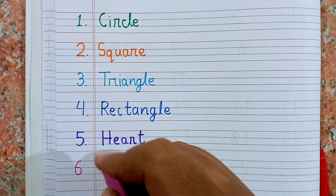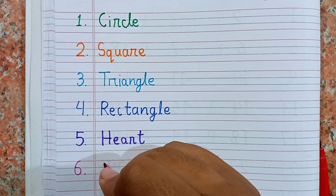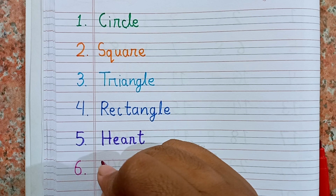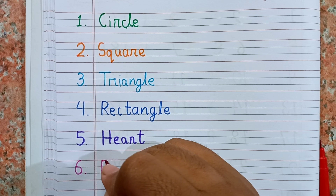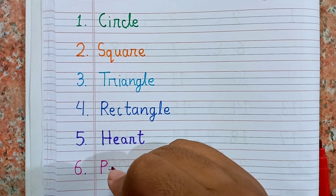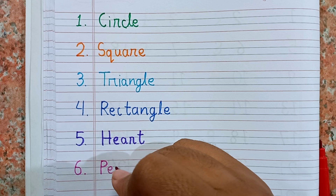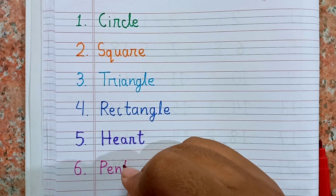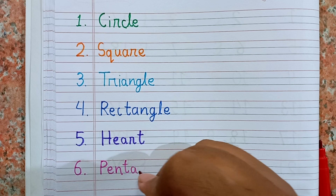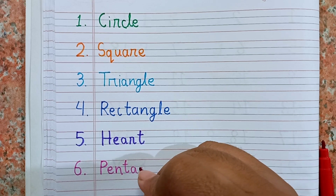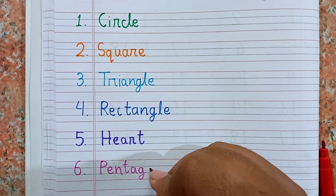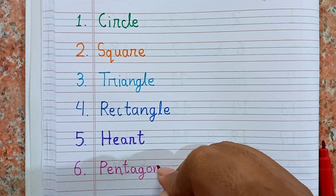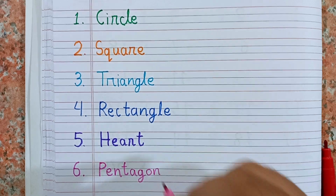Next, number six, I am writing pentagon. The spelling of pentagon is P-E-N-T-A-G-O-N. Pentagon. This is pentagon.